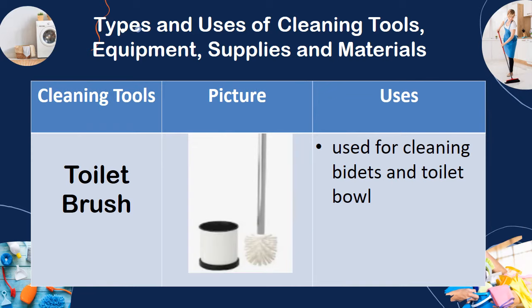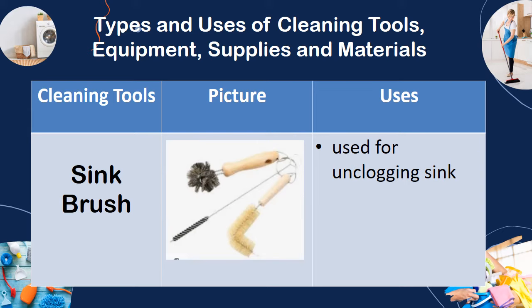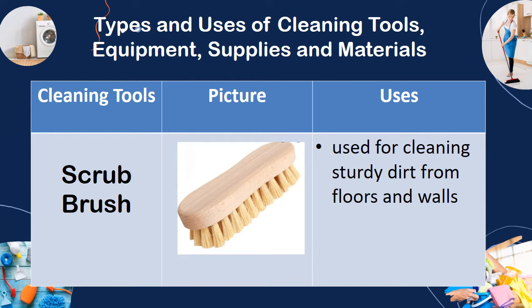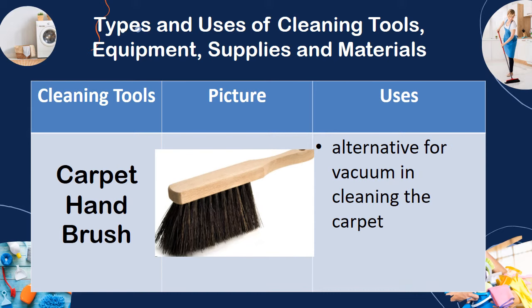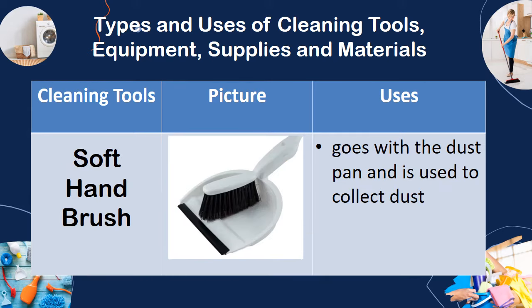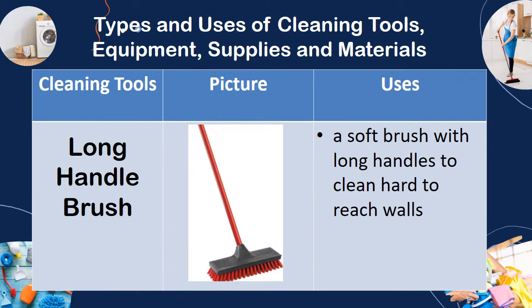Toilet brush — used for cleaning bidet and toilet bowls. Sink brush — used for unplugging the sink. Scrub brush — used for cleaning sturdy dirt from floors and walls. Carpet hand brush — an alternative for a vacuum in cleaning the carpet. Soft hand brush — goes with the dust pan and is used to collect dust. Long handle brush — a soft brush with long handles to clean hard-to-reach walls or used in scrubbing floors.